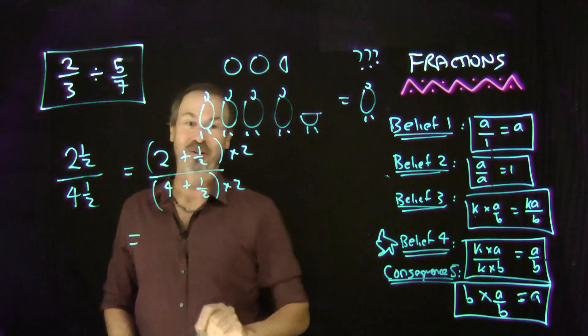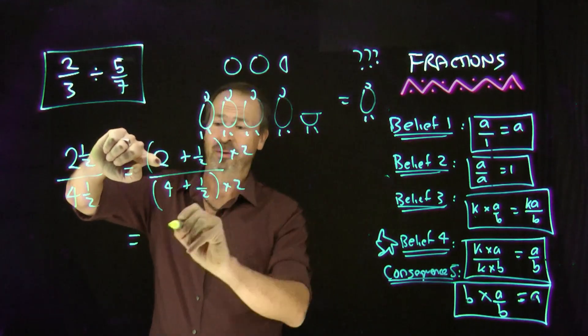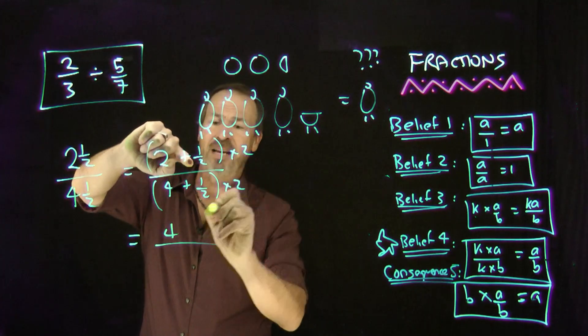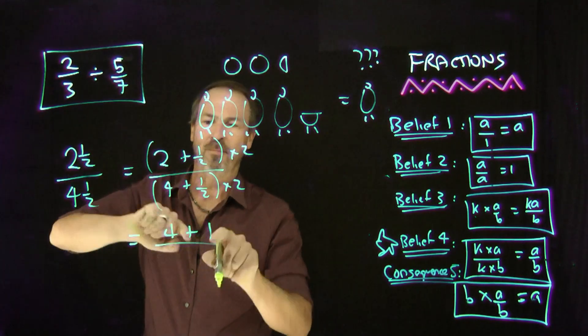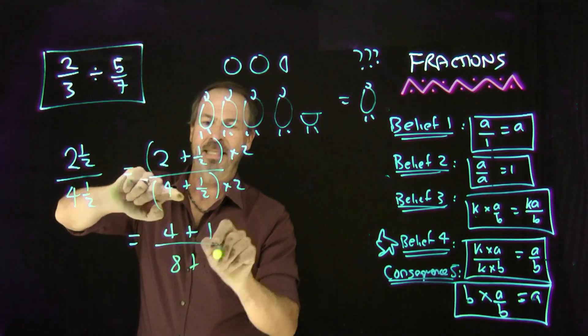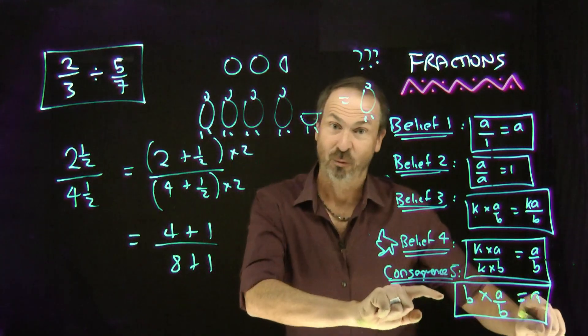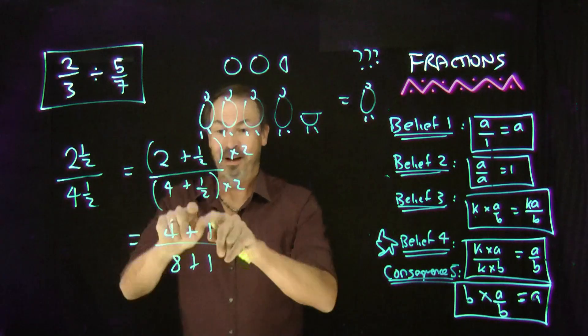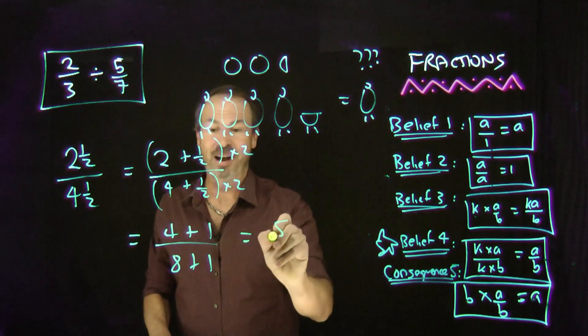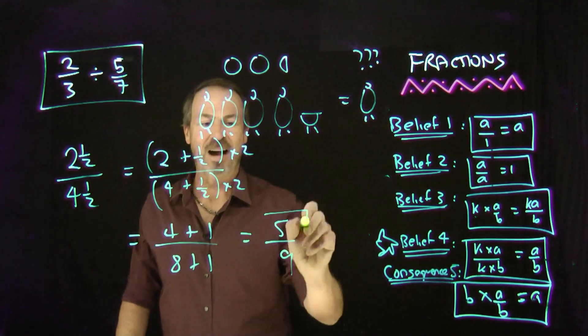Great. And I can do that. 2 times 2. 2 doubled is 4. Half doubled is 1. 4 plus 1. 4 doubled is 8 plus half doubled is 1. I went faster. I'm actually really using this rule over and over again right now. But there it is. I can see it's actually 5 on the top, 9 on the bottom, 5 ninths.